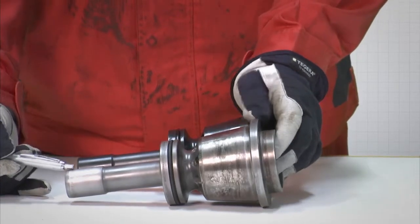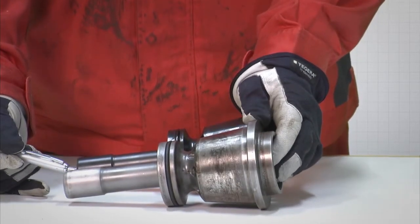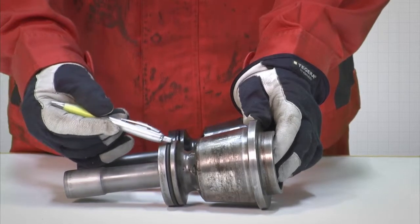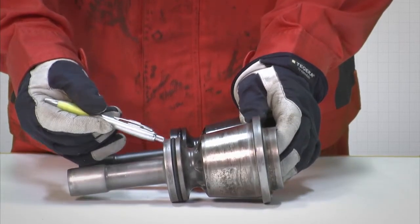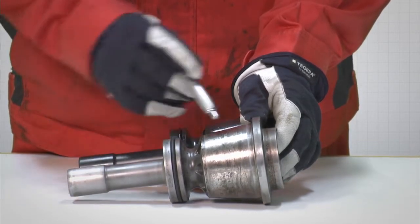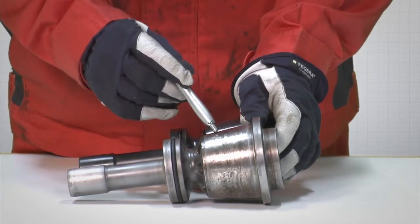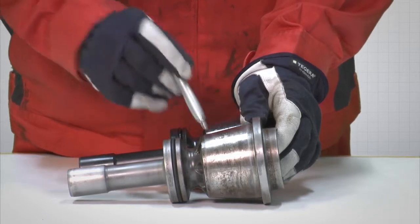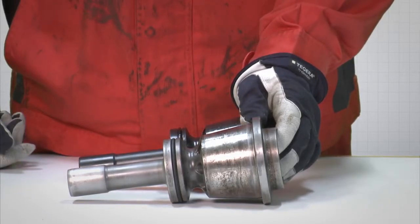Look for any nicks, burrs or galling on the air distributor and polish if necessary. Damages on the O-ring are vital for future function. So are also any evidence of movement micro-sliding in the taper lock area. Replace the air distributor if there are any cracks.